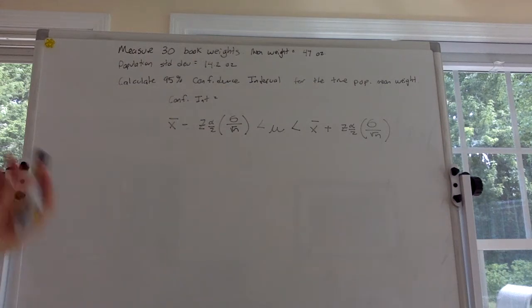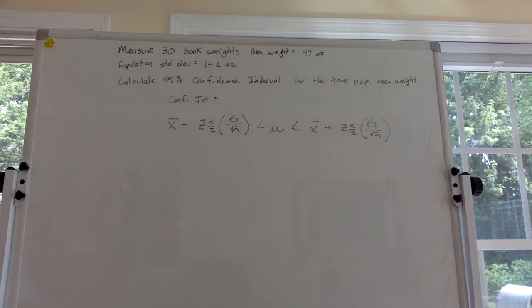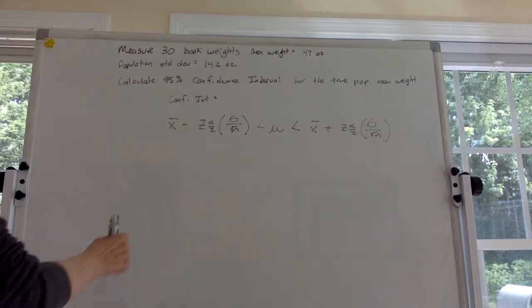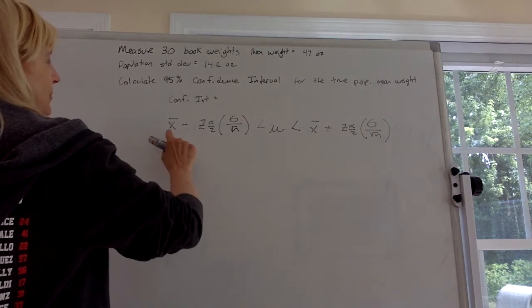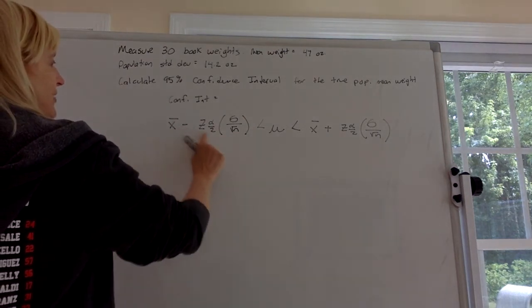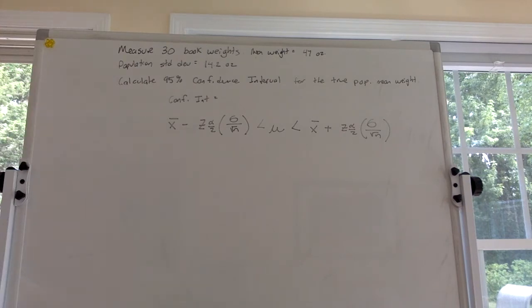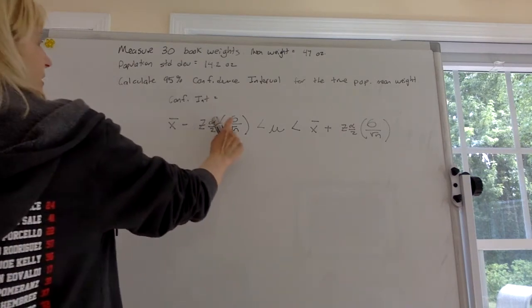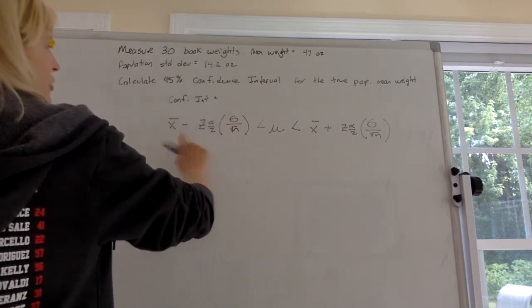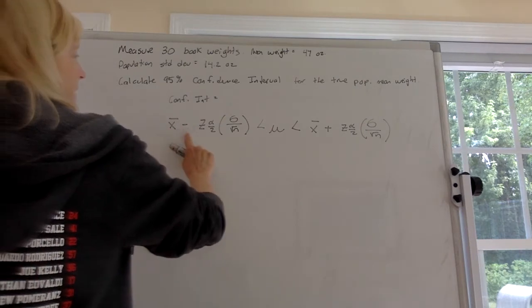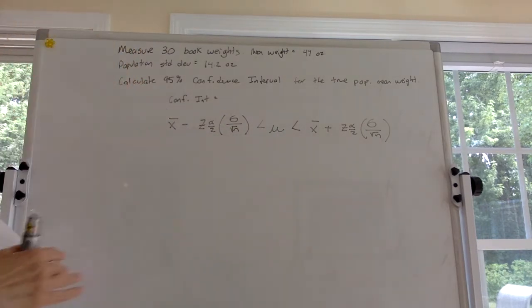So it's an interval, a range. You're going to have two numbers, a low number and a high number. How do we find it? We use this formula. You do the mean weight of the books minus z alpha over 2, that's our critical value, times the standard deviation divided by the square root of n. So you subtract it from that mean and you add it to the mean to get that interval, to get that range of numbers.